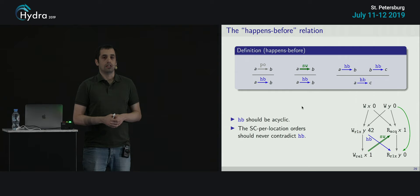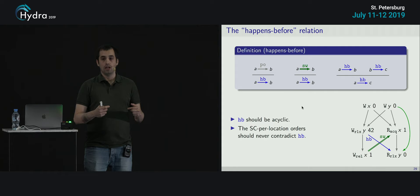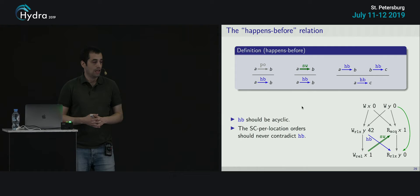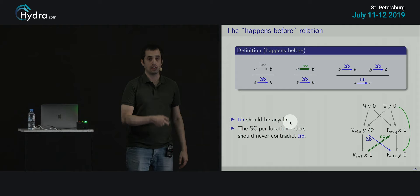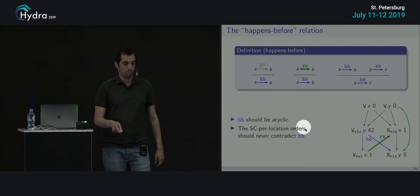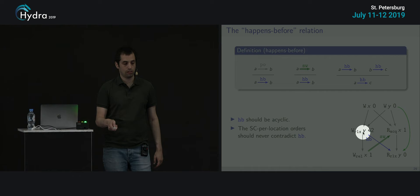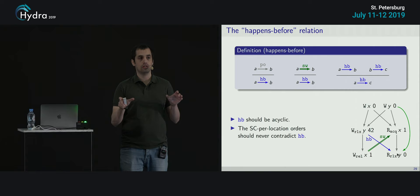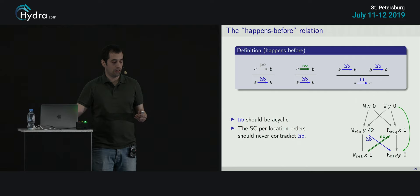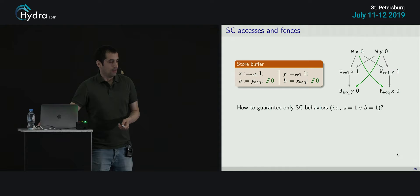Now we define happens-before: if you have program order, you have happens-before; if you have synchronization, you have happens-before; and happens-before is transitive. Two conditions follow: happens-before must be acyclic (no cycles), and the sequential-consistency-per-location orders (Sx, Sy) must never contradict happens-before. So if I have happens-before from a write to a read through a synchronization edge, the order for Y must place the write before the read — I cannot contradict happens-before. This is how constraints across different locations are created: release-acquire gives happens-before, which induces constraints on the per-location orders.